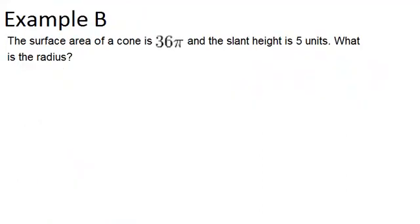In example B, it says the surface area of a cone is 36 pi, and the slant height is 5 units. What is the radius? So let's remember that our formula for the surface area for a cone is pi r squared plus pi r l, where r is the radius and l is the slant height.